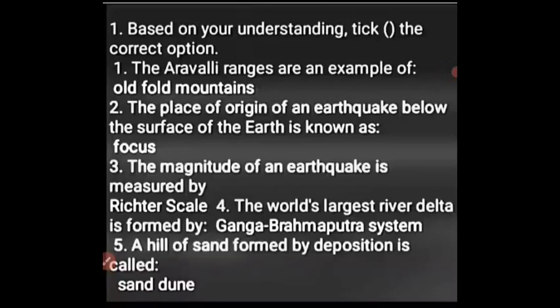Based on understanding, pick the correct option. Dharavali Ranges are an example of old fold mountains. The place of origin of an earthquake below the surface of the earth is known as Focus. The magnitude of an earthquake is measured by the Richter scale. The world's largest river delta is formed by the Ganga-Brahmaputra system. A hill of sand formed by deposition is called a Sand Dune.